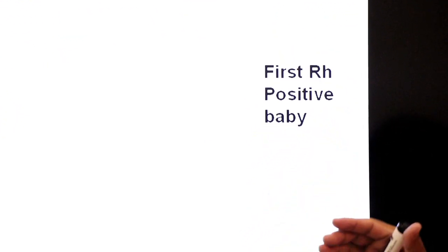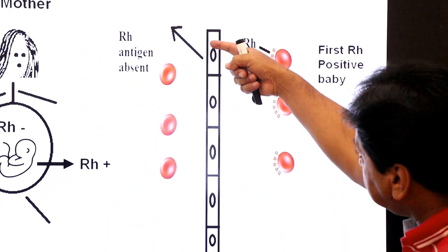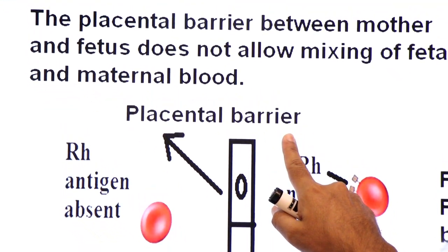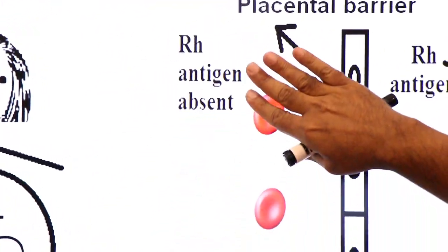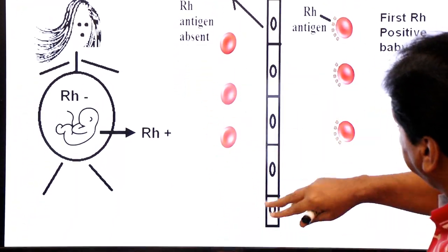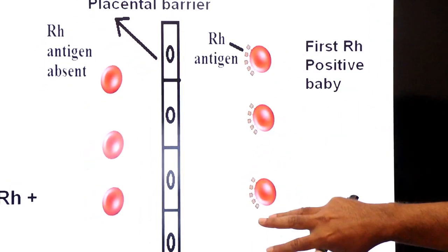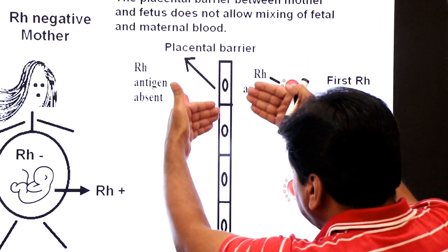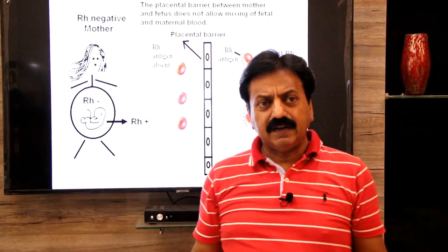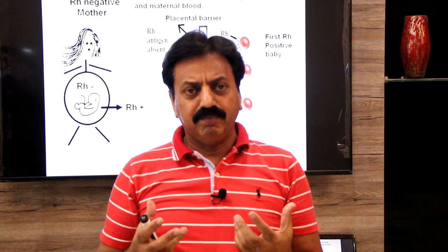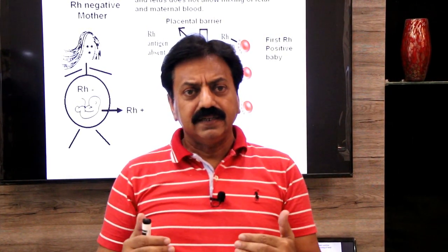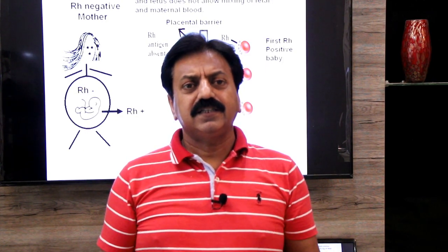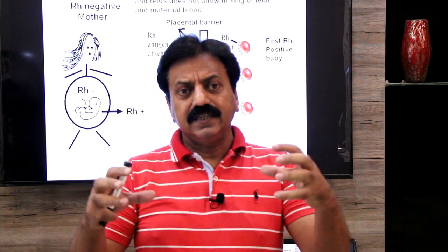During the first pregnancy with an RH positive baby, the placental barrier separates the circulating blood of the mother from the circulatory system of the fetus. This barrier does not allow fetal blood to mix with the mother's blood. But as soon as the pregnancy is complete and the mother gives birth, the placental barrier breaks, and at that time these two bloods can mix.